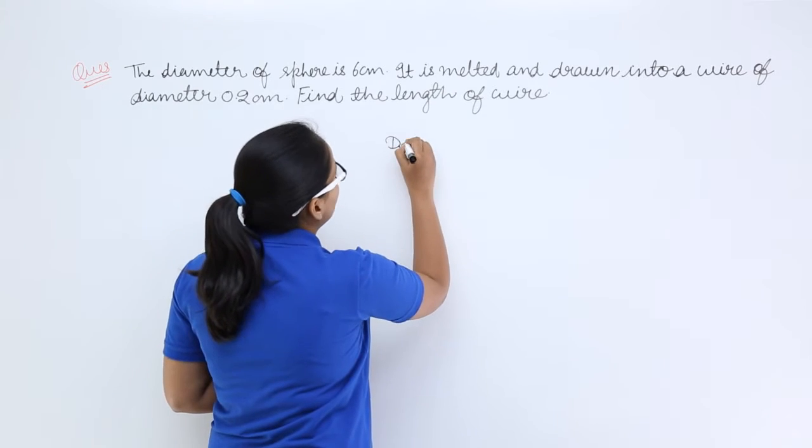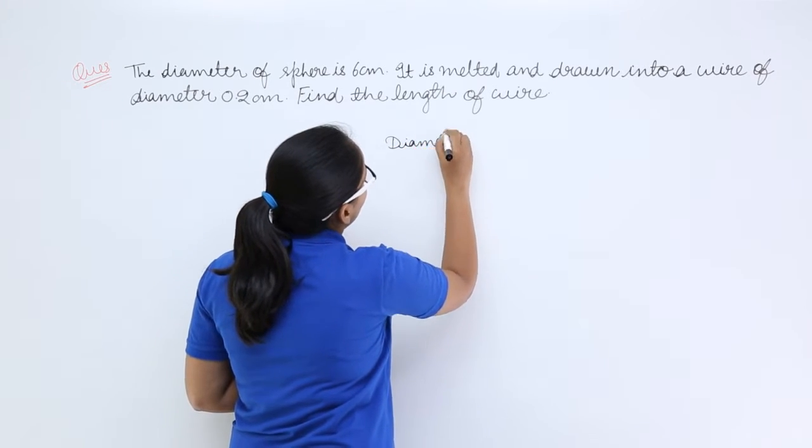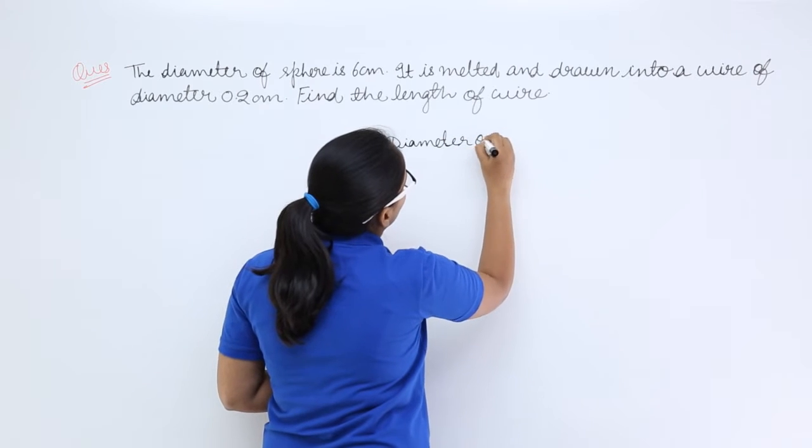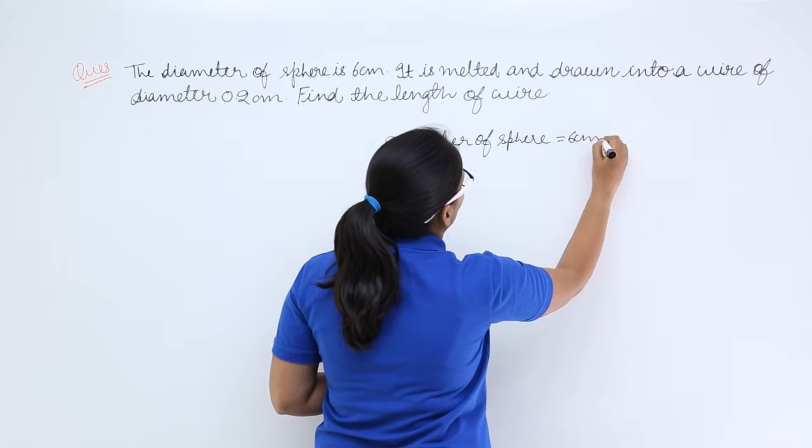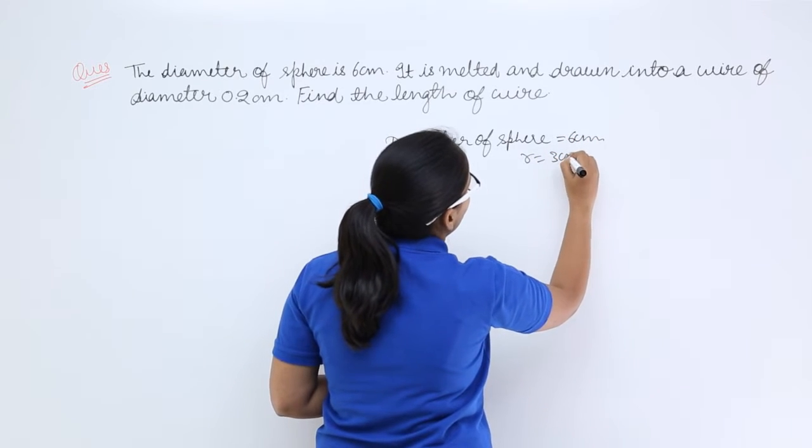What do you know about this problem? Here you know that diameter of sphere is 6 centimeters, so its radius will be 3 centimeters.